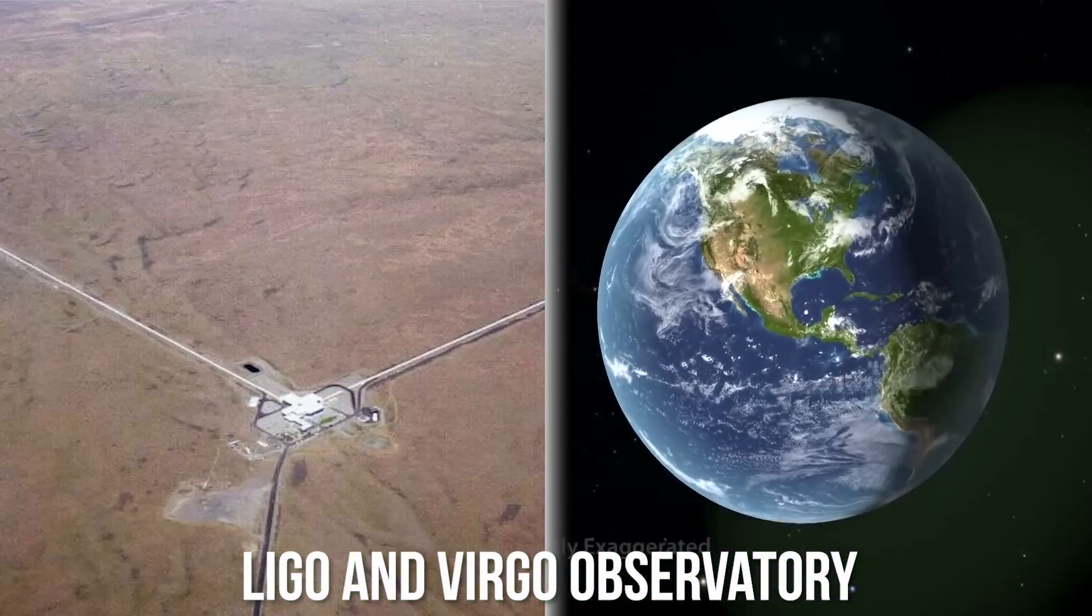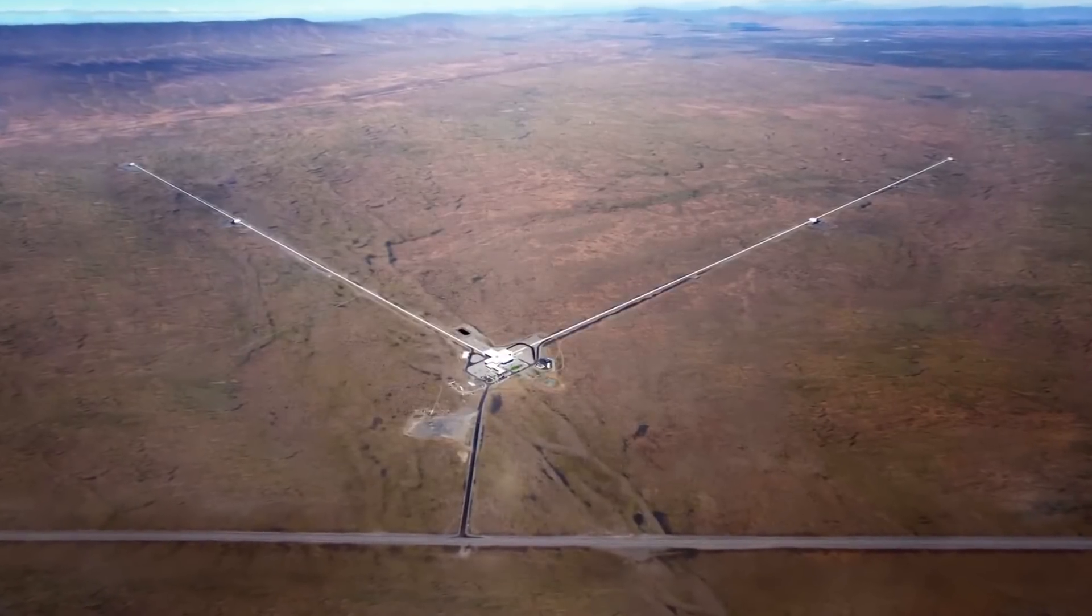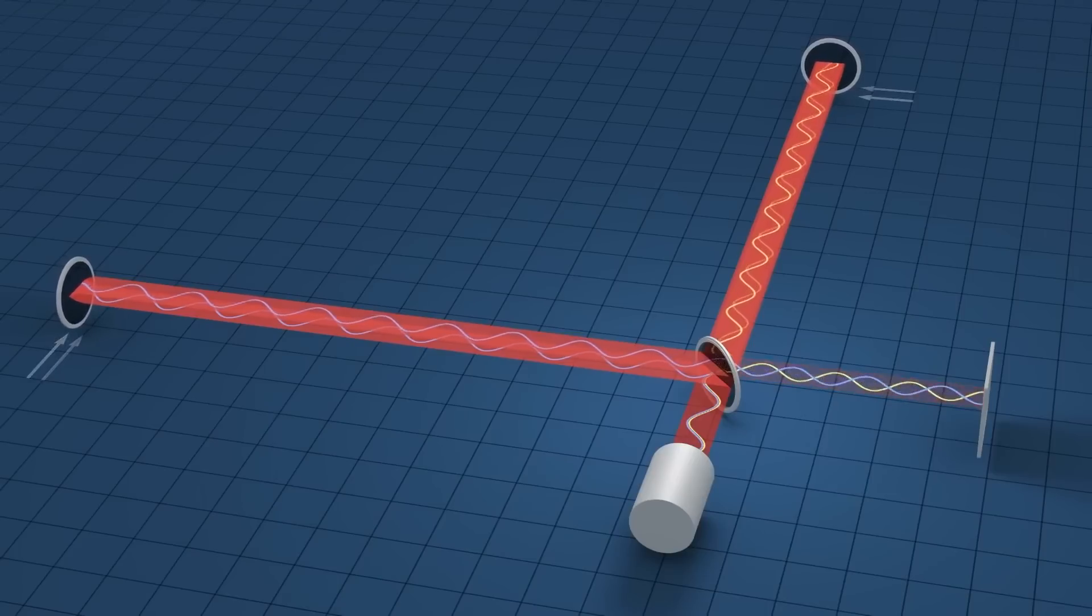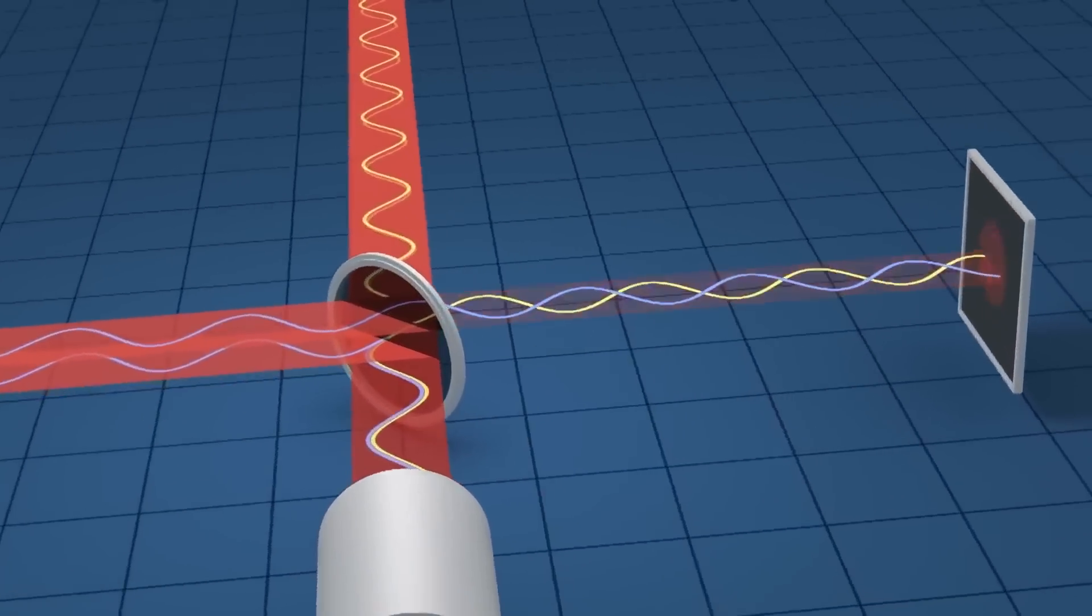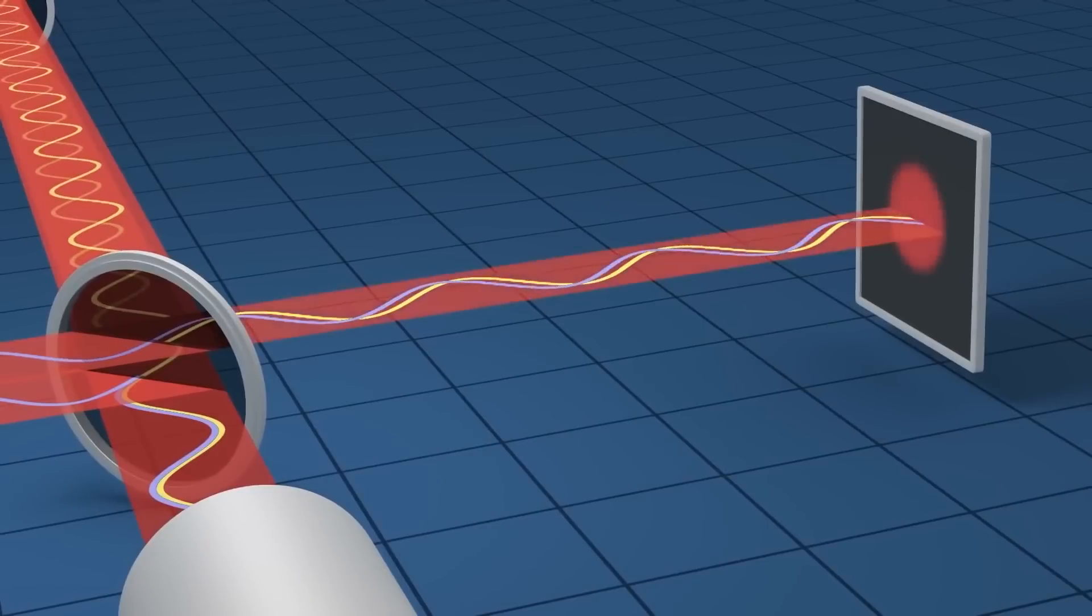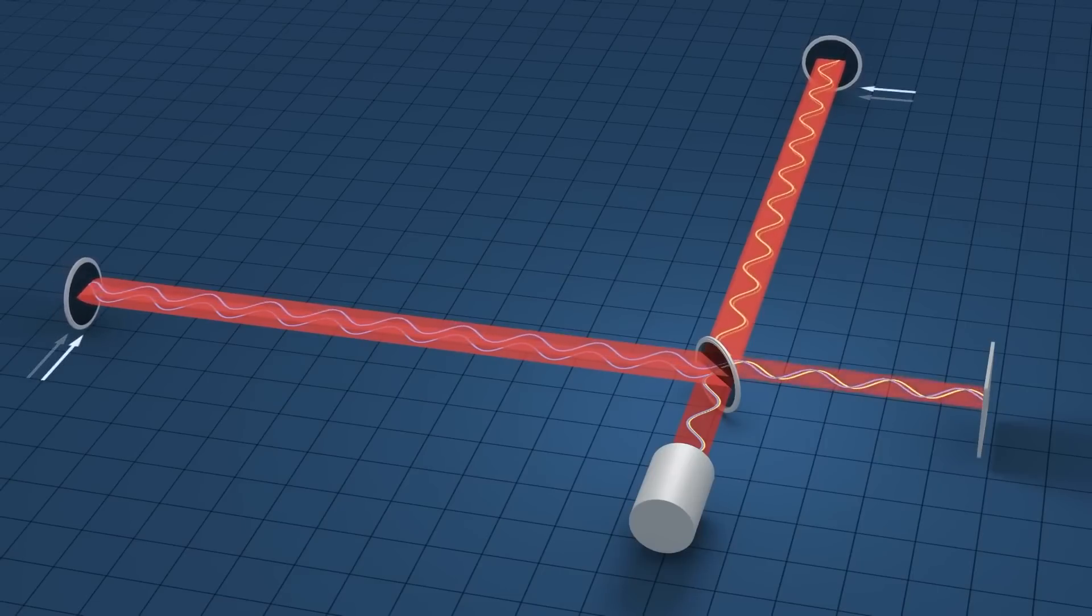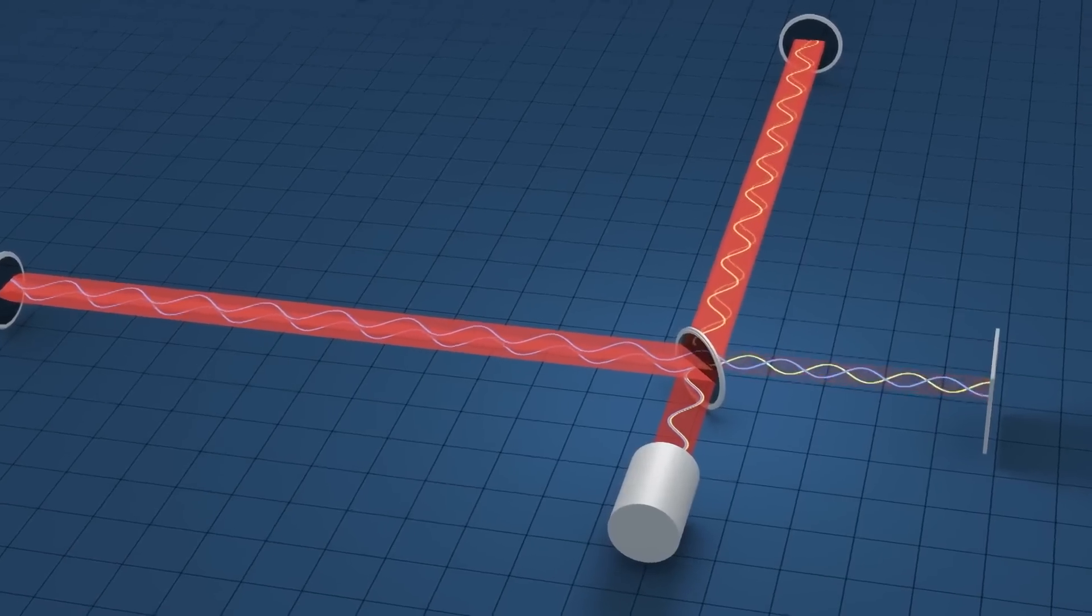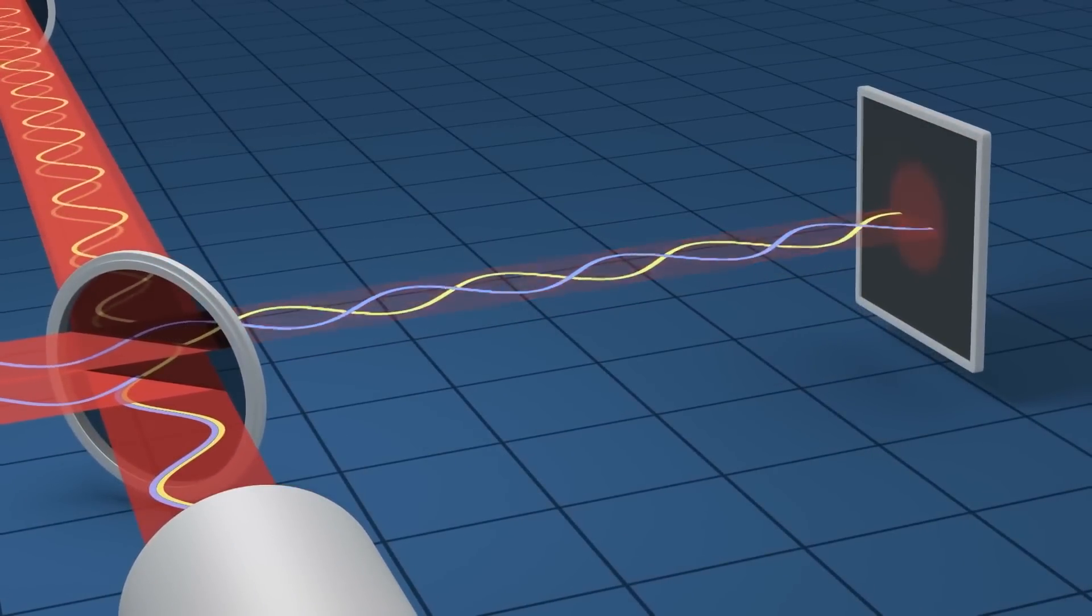Recently, the LIGO and Virgo Observatory confirmed the existence of gravitational waves through direct detection. But even before that, we had other evidence that strongly suggested their existence. Some people might argue that this other evidence alone was enough to prove that gravitational waves exist. For instance, we observed binary pulsars emitting gravitational waves, although LIGO and Virgo didn't detect the waves from those particular pulsars. However, just because we can't see something directly doesn't mean it isn't there.